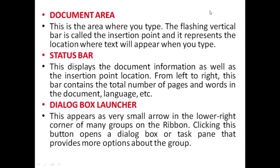The document area is the area where you type. The flashing vertical bar is called the insertion point and represents where text will appear when you type. The status bar displays document information and the insertion point location — it contains the total number of pages, words in the document, and language. The dialog box launcher appears as a very small arrow in the lower right corner of many groups on the ribbon. Clicking it opens a dialog box or task pane providing more options for that group.